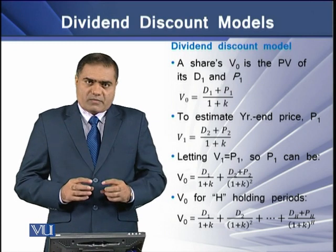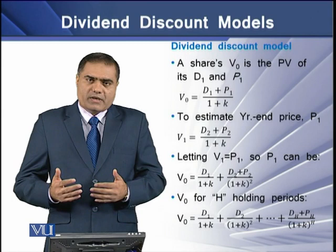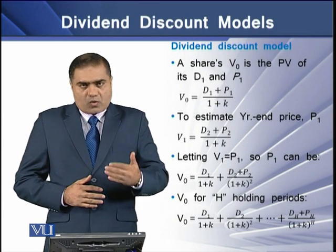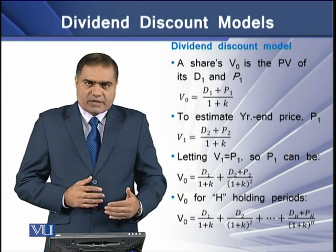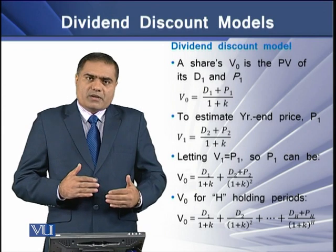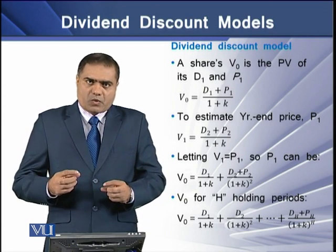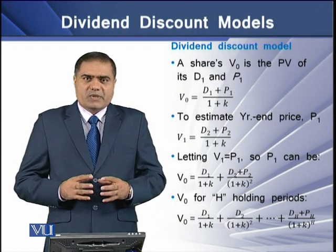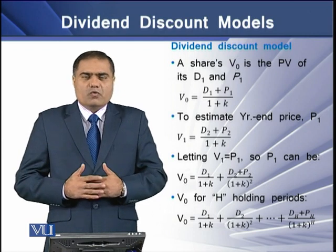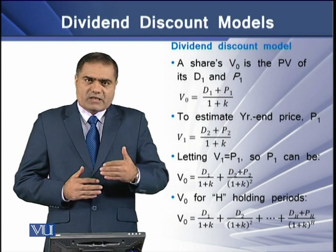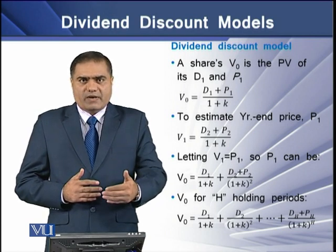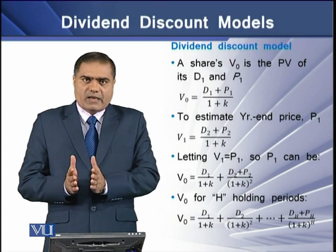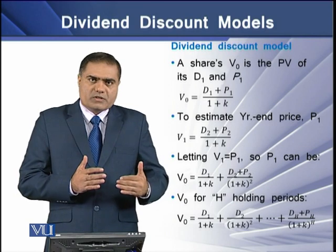Similarly, V0 for a holding period H can be obtained, where V0 equals D1 over the capitalization rate, plus D2 over the capitalization rate, plus D3 over the capitalization rate, and so on, up to the holding period's dividend plus the holding period's sale price, all divided by the capitalization rate. The summation of the present values of all these cash flows is termed the intrinsic value at time zero, V0.